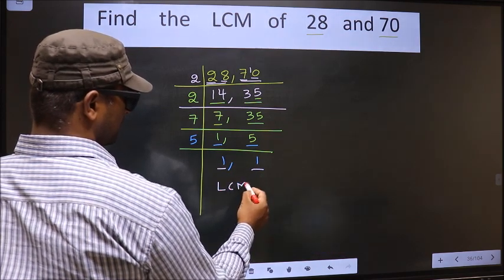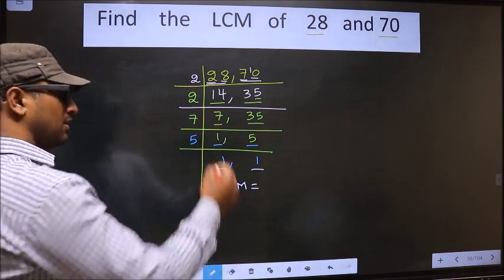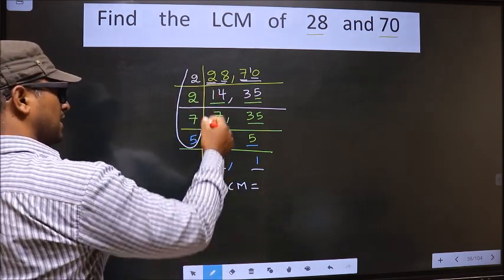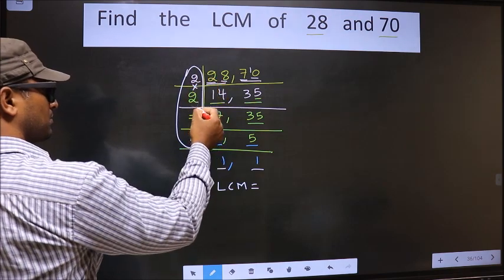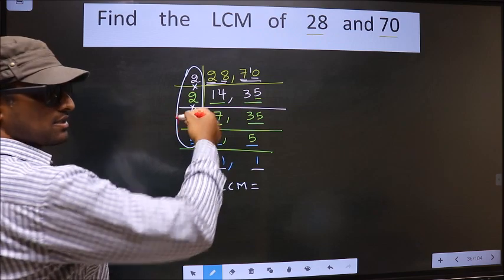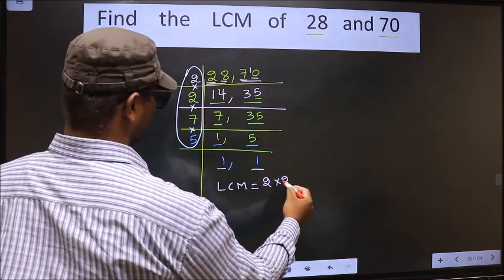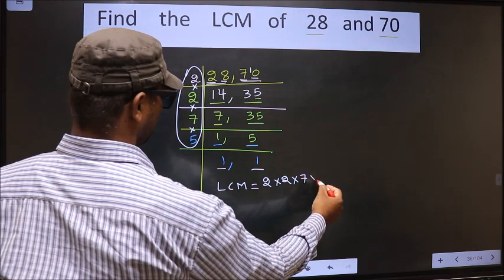So our LCM is, LCM is the product of these numbers. Okay, product of these numbers. That is 2 into 2 into 7 into 5.